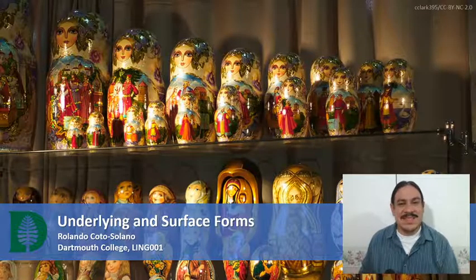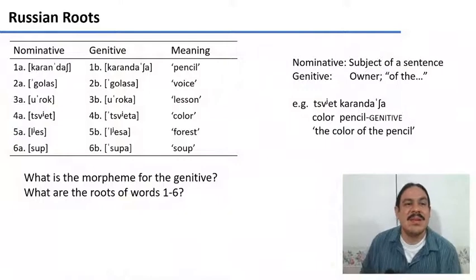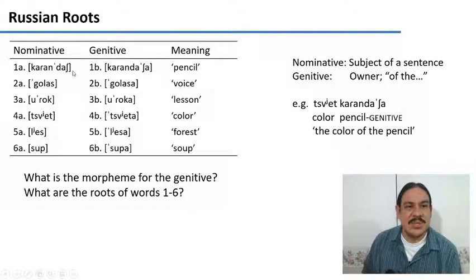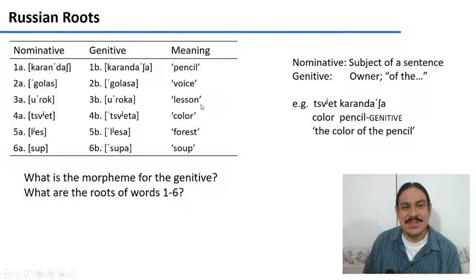We're going to use an example from Russian, looking at Russian nominative nouns and genitive nouns. Nominatives are, for example, the subject of a sentence. The words are: karandash, golos, urok, tsvet, les, and sup — meaning pencil, voice, lesson, color, forest, and soup.